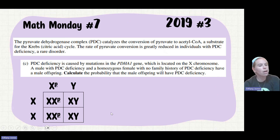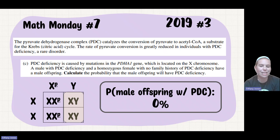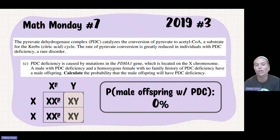I want to calculate the probability of the male offspring. Well, my male offspring got their X's from the mother. And so there's actually a 0% chance that the affected male is going to pass it on to his male offspring.